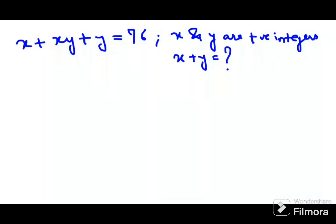Welcome everyone. This one is very tricky. We have x + xy + y = 76 and we need to find the value of x + y, and they have given that they are positive integers.